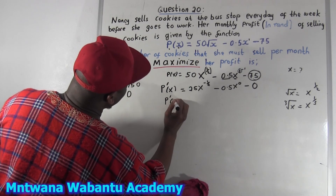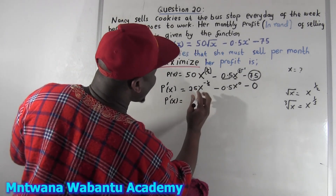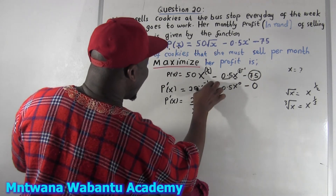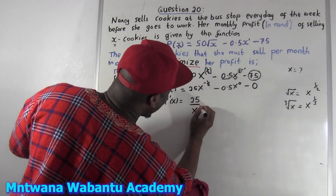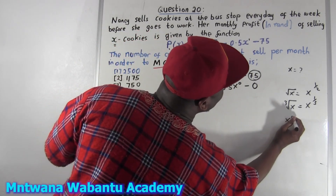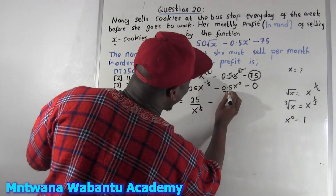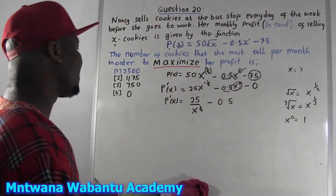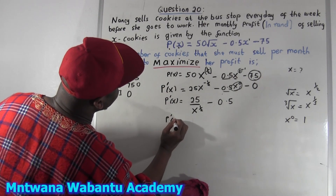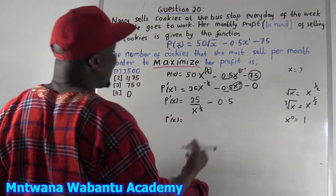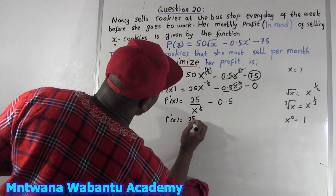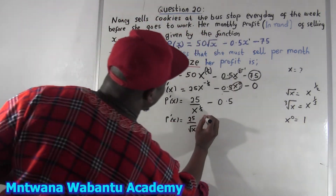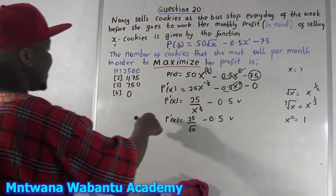So this is the first derivative. Now we're going to reciprocate x to the negative one-half. It's going to be 25 over square root of x — you take the negative exponent to the bottom and the sign changes to positive one-half. Any number to the power of zero equals one, so 0.5 times 1 equals 0.5. Our first derivative is P'(x) = 25 over square root of x minus 0.5.